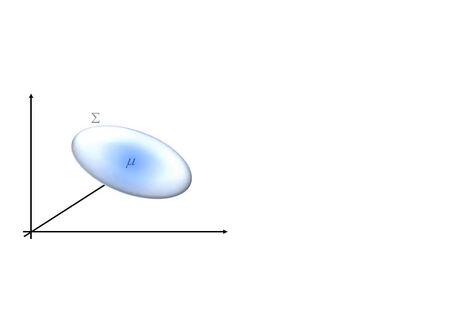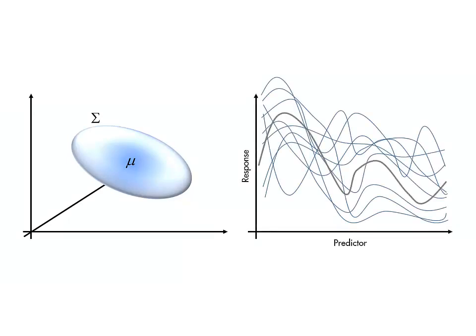Points in a finite-dimensional space can be sampled from a probability distribution, determined by a mean vector and covariance matrix. Similarly, we can have a probability distribution of functions, determined by a mean function and a covariance function.